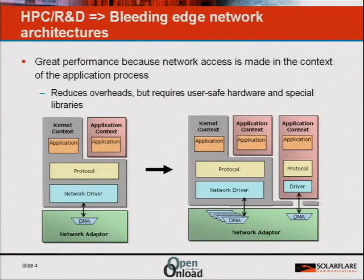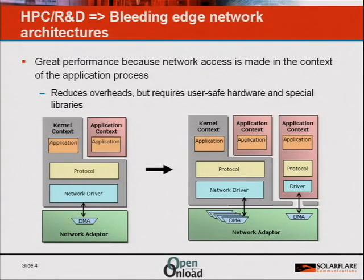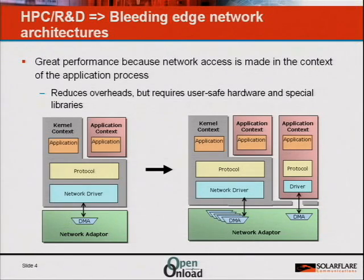For the last 10 years, what constitutes the bleeding edge of network architectures is that the network adapter provides a protected virtualized interface which allows the application context to communicate safely with the network without using the operating system. The big feature of this architecture is it reduces the overhead required to invoke the network stack — you can reduce overhead significantly by not going through the operating system, and under some circumstances you can run with a much reduced rate of interrupts as well. Dave's going to go into this in a lot more detail later.